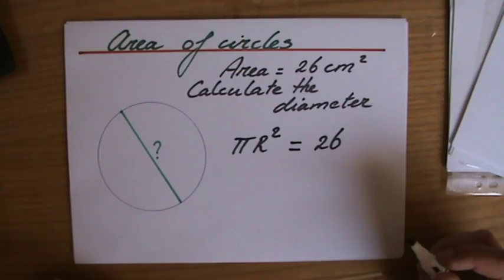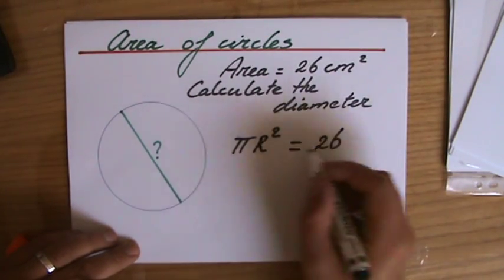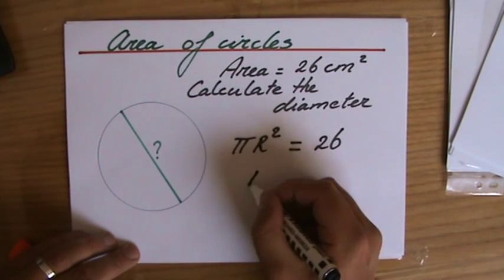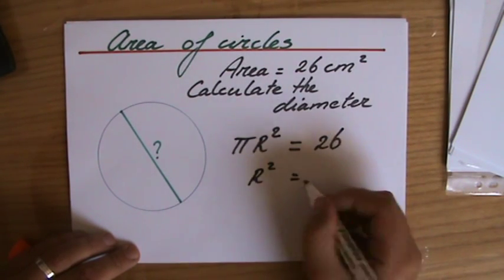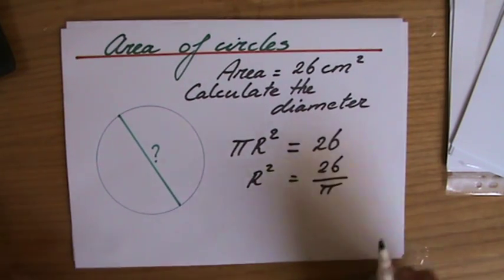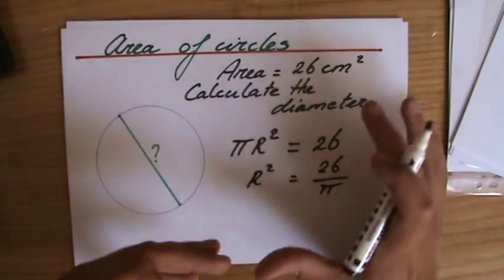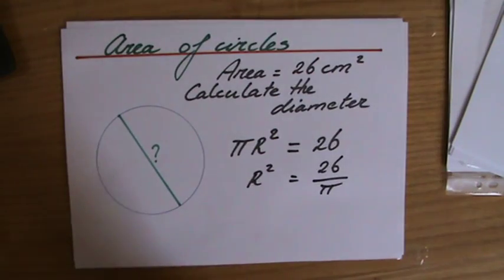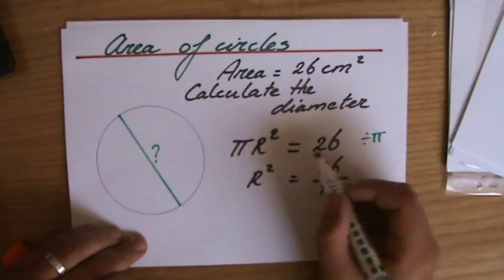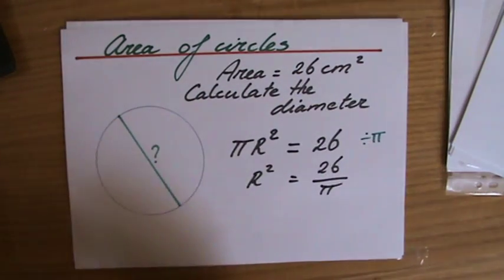Agree? I hope so. Now I have to find then the radius because pi is a number, so the radius squared equals 26 divided by π. I am rearranging the formula. This is algebra - I am dividing both sides by π because then it's gone here, so I have 26 divided by π.